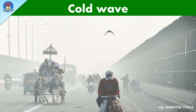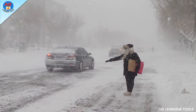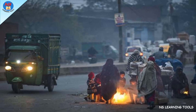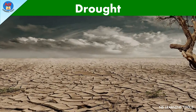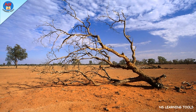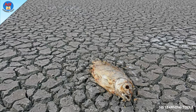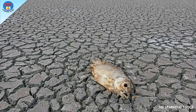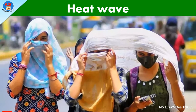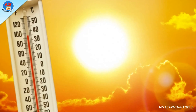Cold wave: a cold wave is a rapid fall in temperature within 24 hours and extreme low temperatures for an extended period. Drought: a drought means that a place has less precipitation — rain or snow — than normal over a few months or even longer. Heat wave: a heat wave is a period of abnormally high temperatures, more than the normal maximum temperature.